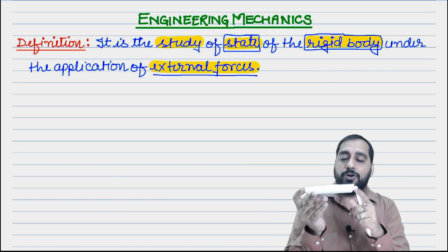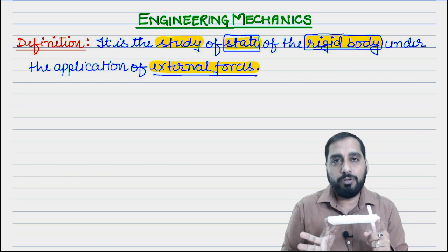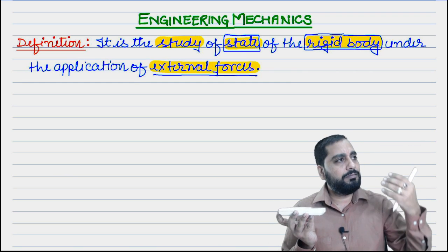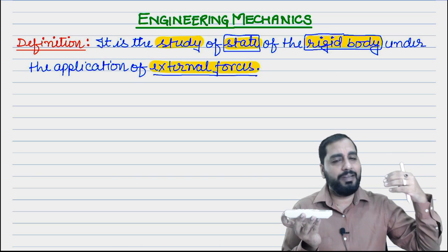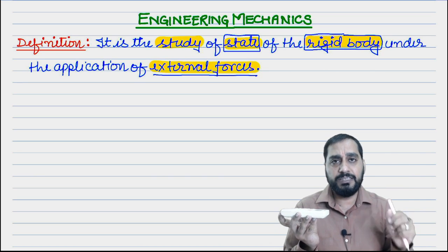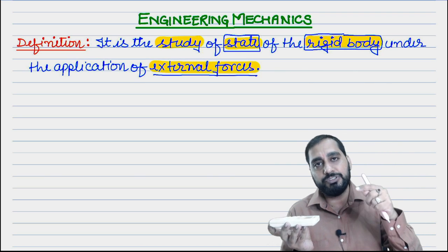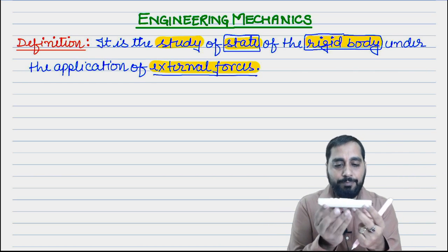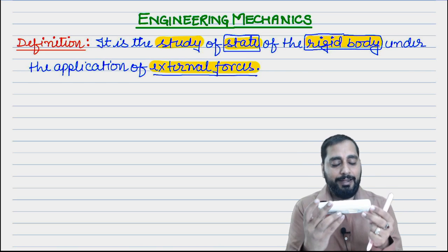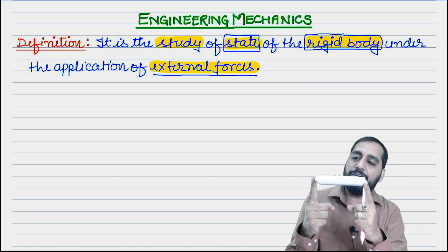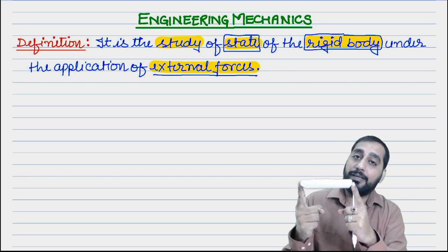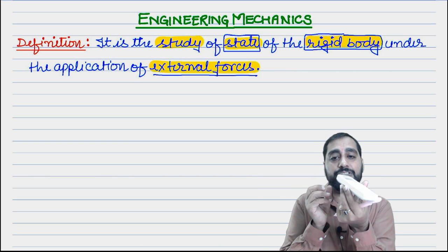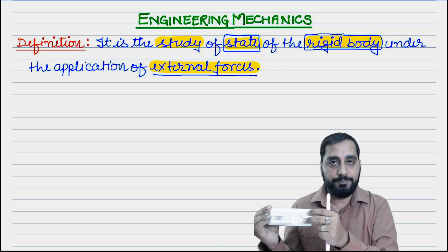State means condition. The body can either be at rest or in motion. If in motion, we know many types: linear motion, translational motion, rectilinear motion — these are of one type — then circular motion, rotational motion, general plane motion, rolling motion. So we have to analyze: if forces are applied on a rigid body, what will be its state — rest or motion, and if motion, what type?